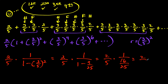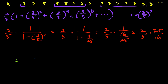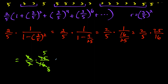So we have two-fifths times one over sixteen over twenty-five. We simplify by flipping: two-fifths times twenty-five over sixteen. Two over sixteen reduces to one over eight, and twenty-five divided by five is five. So this simplifies to five over eight. That is the probability of Hank winning.